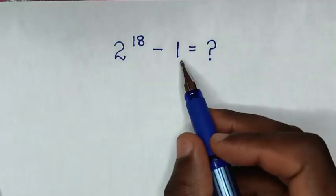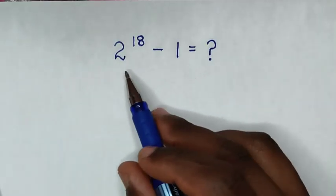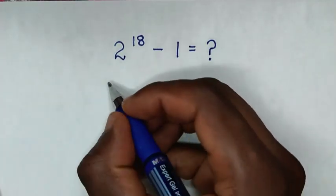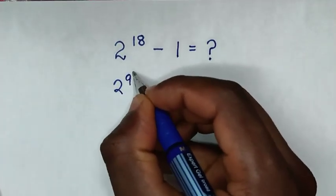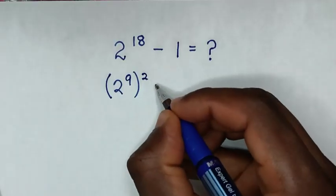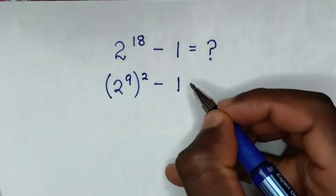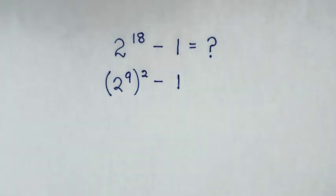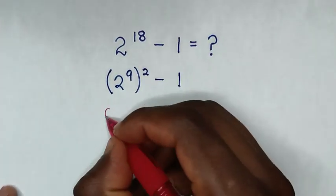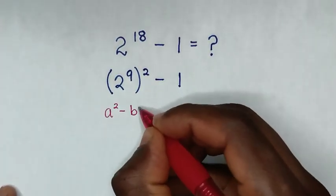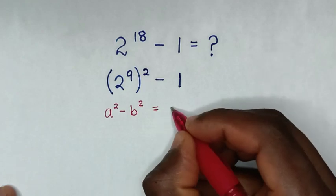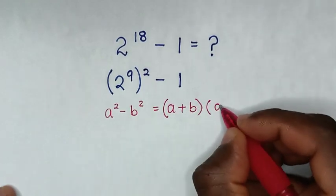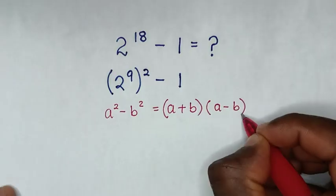From this problem we make this in the form of a perfect square. So 2 power of 18 is the same as 2 power of 9 bracket square, then minus 1. We'll apply the perfect square rule which is a square minus b square is equal to a plus b bracket, times a minus b bracket.